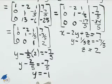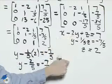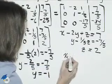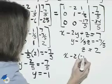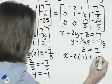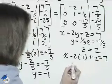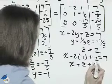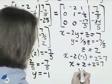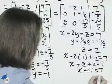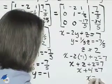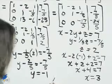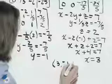Then last, we replace y with negative 1 and z with 2 in the first equation. So x minus 2 times negative 1 plus 2 equals 7. Negative 2 times negative 1 is positive 2, so x plus 2 plus 2 equals 7. x plus 4 equals 7. x equals 3. That gives us the solution: 3, negative 1, 2.